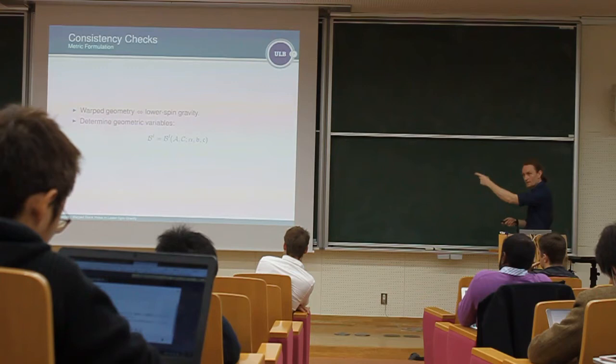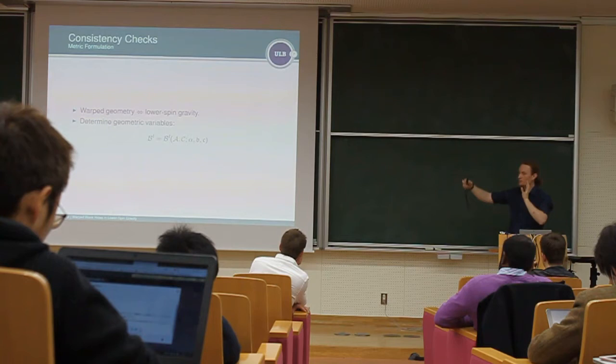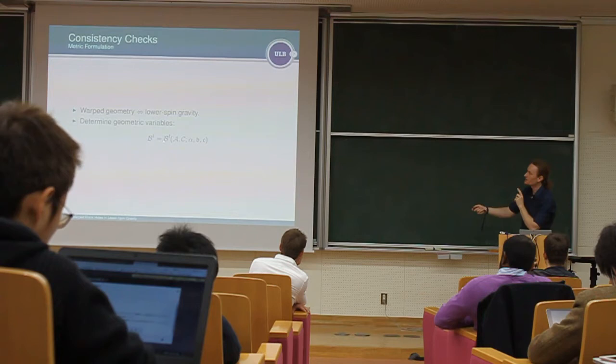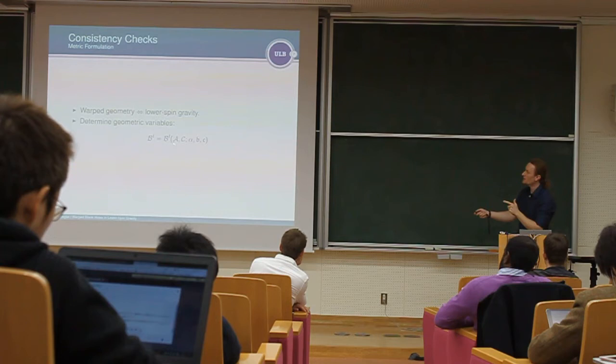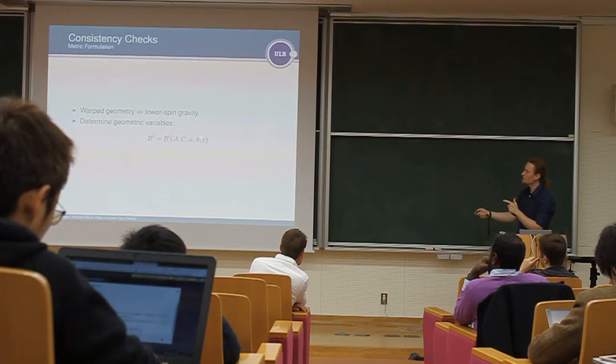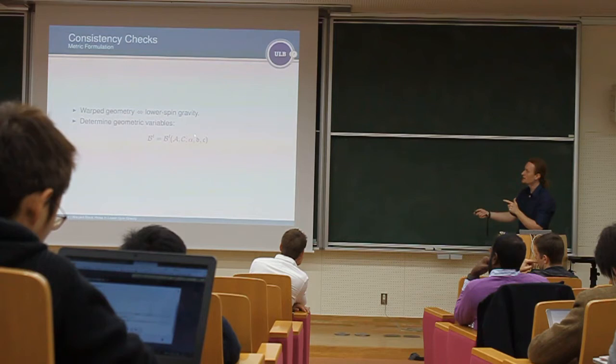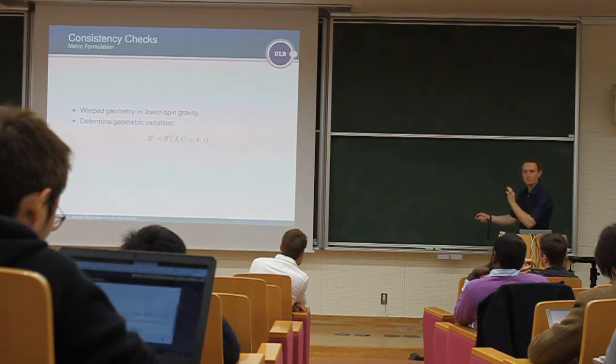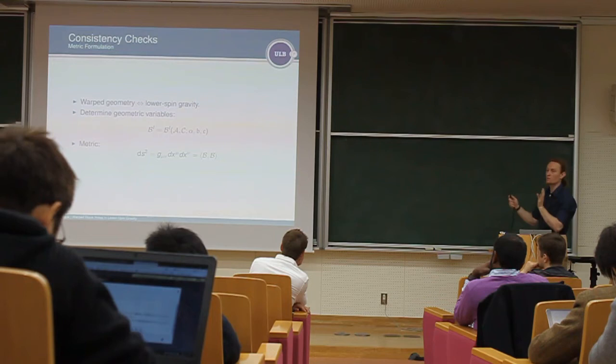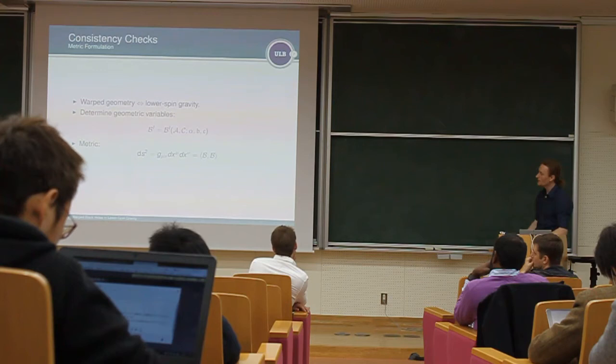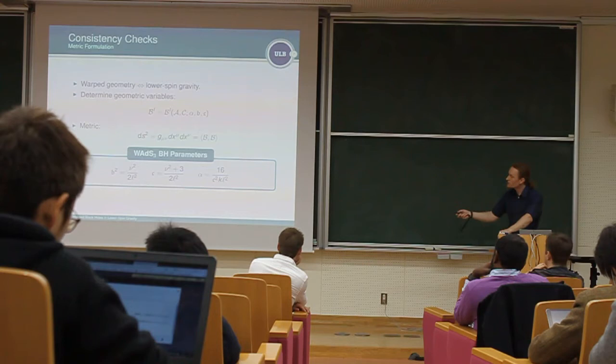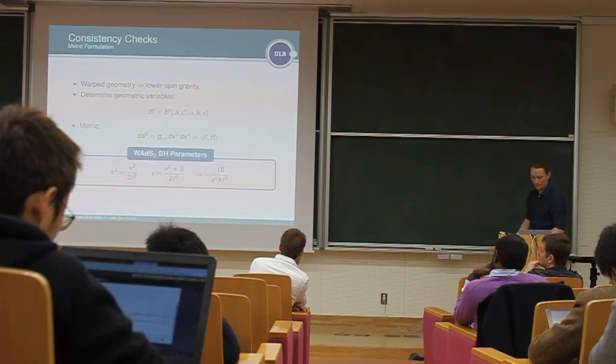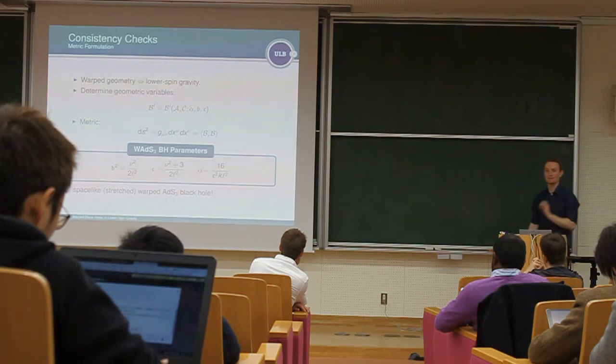And in order to get the metric out of this rewritten SL2 plus U1 Chern-Simons theory, you have to do a little bit of, you have to basically invert this rewriting again to find the geometric variables. So if you want, these are nothing else than the dreibeins and your local frame for a metric. So you do that by linearly combining your gauge fields A and C using three parameters, alpha, B and C, where this is basically, this corresponds to arbitrary scaling of time. This B encodes your warping of your spacetime, and C encodes the AdS radius. So that's what these constants mean. And if you do that, you can straightforward determine the metric associated to your gauge theory, or to the boundary conditions I imposed.